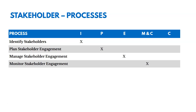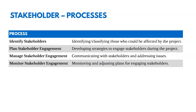There are four processes in this chapter. One's in initiating, one's in planning, one's in executing, and one's in monitoring and controlling. We're identifying stakeholders in initiating — identifying and classifying those who could be affected by the project. In planning stakeholder engagement, we're developing strategies for how to engage with those stakeholders. In managing stakeholder engagement, we're actually communicating with stakeholders and addressing issues as they arise. Then we monitor those relationships over time and make adjustments as needed.